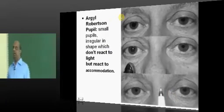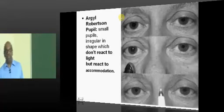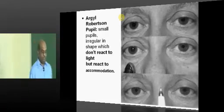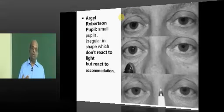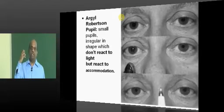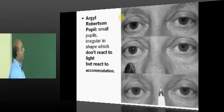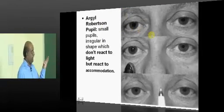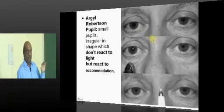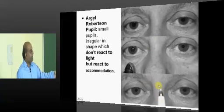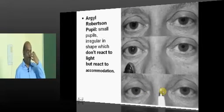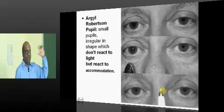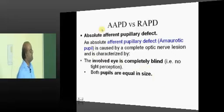The Argyll Robertson pupil leads to a characteristic pupillary constriction pattern. The pupils are small and irregular in shape. They do not react when you throw light, but if you bring an object closer, they react to accommodation. So the accommodation reflex is normal but the light reflex is missing — that is the typical feature of the Argyll Robertson pupil.